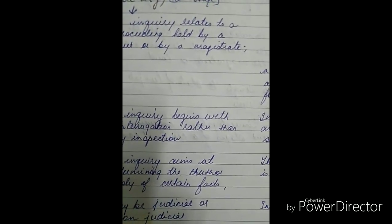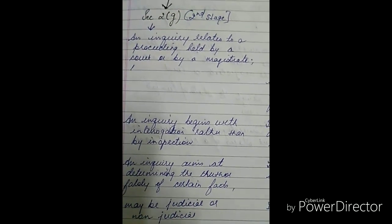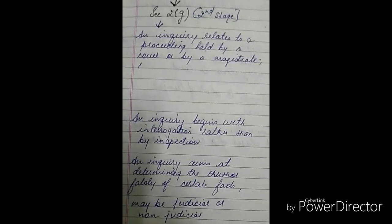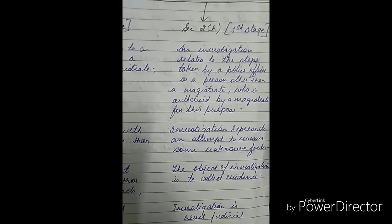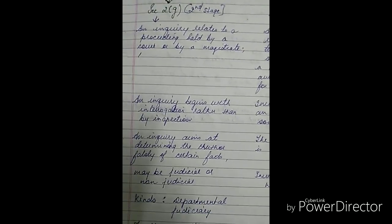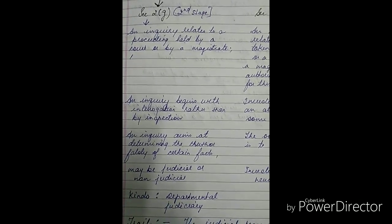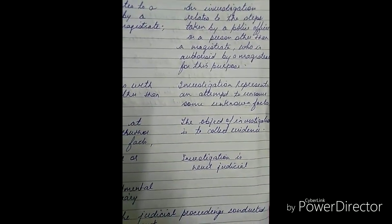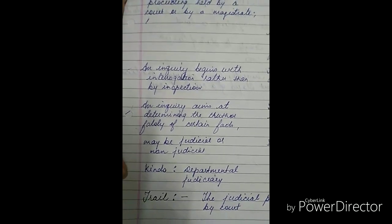To summarize the key points: inquiry is defined in Section 2G and is the second stage; investigation is defined in Section 2H and is the first stage. Inquiry involves court or magistrate proceedings, while investigation involves a police officer or a magistrate-authorized person. Inquiry begins with interrogation rather than inspection, and investigation uncovers unknown facts. Inquiry aims to determine truth or falsity; investigation aims to collect evidence. Investigation is always non-judicial, while inquiry can be judicial or non-judicial.